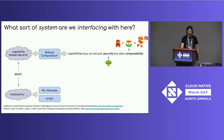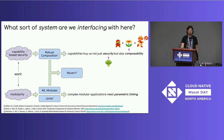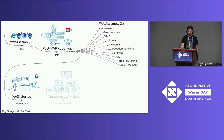We also did research in the modularity direction around the ML module system and the work on units. The high-level takeaway is that complex modular applications need what I'm going to call parametric linking, which I'll talk about more later. And combining these was research on the Wyvern language, which nicely illustrated how capabilities can go really well with parametric linking. Excited by all this, we published and collected these ideas into a nanoprocess vision blog post, which painted a picture of lots of fine-grained nanoprocesses encapsulating their memory and trading fine-grained capabilities between each other.